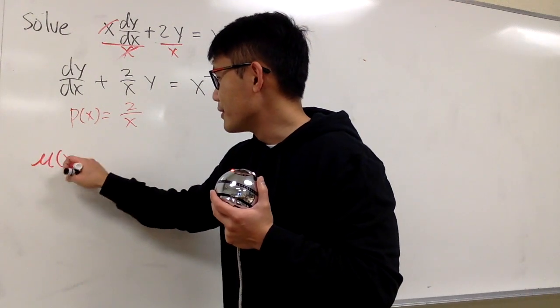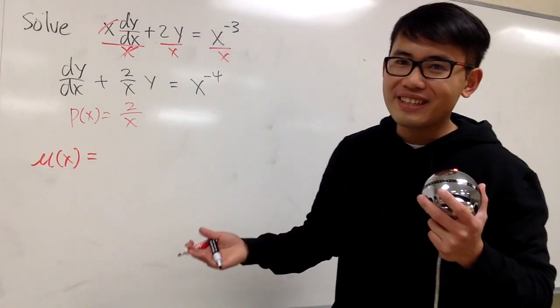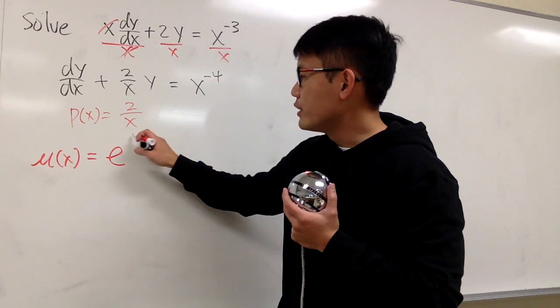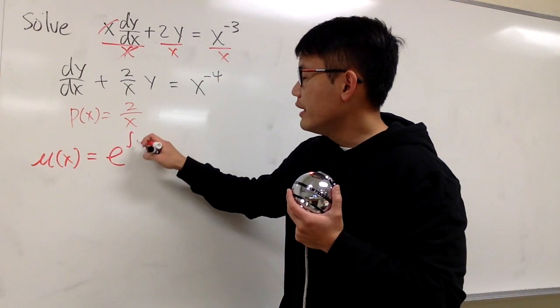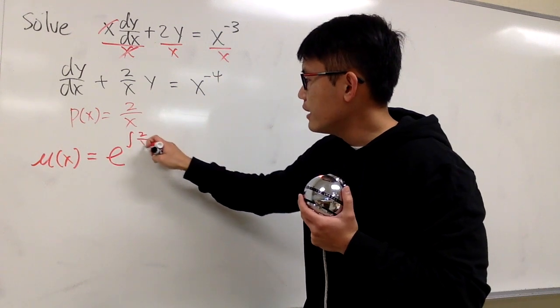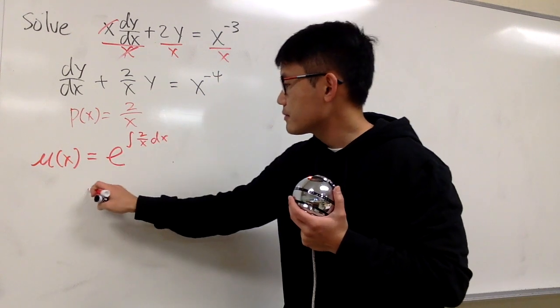Make sure you remember the formula. Otherwise, you have to derive it on the exams and things like that. Anyways, mu of x is equal to e, and we raise to the power, it's integral, integral of p of x, which is 2 over x. Okay, and we'll have the dx.